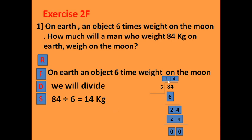We start solving: 84 divided by 6. If we divide 8 by 6, that gives 1; 1 times 6 is 6. Subtract 6 from 8, we get 2. Bring down 4 to make 24. Multiply 4 times 6 to get 24; subtract and we get 0. So 84 divided by 6 equals 14 kg. If my weight on earth is 84 kg, my weight on the moon will be 14 kg. To check the answer, we multiply 14 times 6 — if the answer is 84, it is correct.